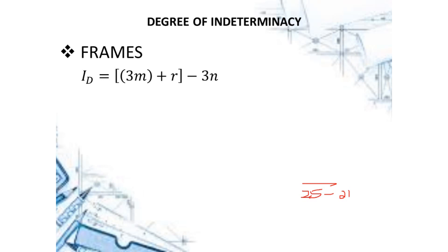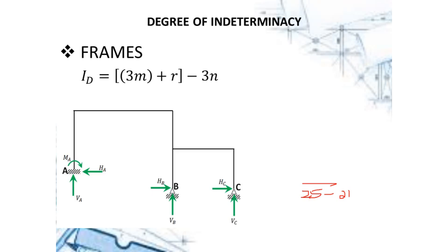For frames, the ID is equal to 3m plus r minus 3n. Again, m, r, and n have the same meaning as before.